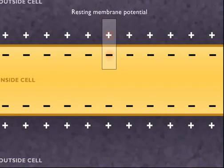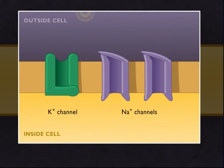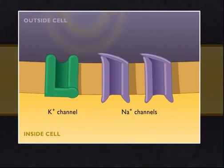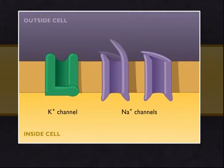A nerve impulse begins when a stimulus disturbs the plasma membrane on a dendrite, causing sodium channels to open. Sodium ions flow into the cell, lessening the charge difference at that location.